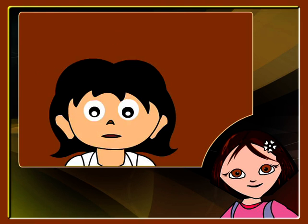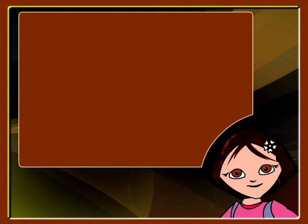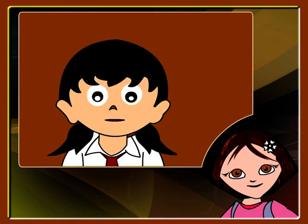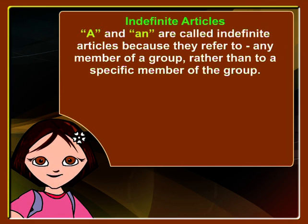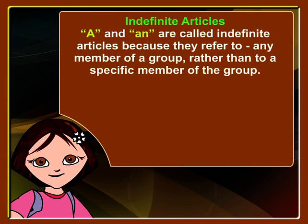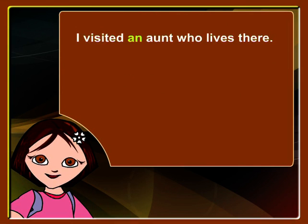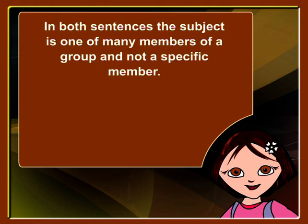Rohini says: 'Wow, you are a lucky girl! So where did you go?' Anita replies: 'To Goa. I visited an aunt who lives there.' A and AN are called indefinite articles because they refer to any member of a group rather than to a specific member of the group. In 'You are a lucky girl' and 'I visited an aunt who lives there,' the subject is one of many members of a group, not a specific member.